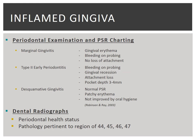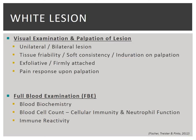In considering the differential diagnosis relating to the inflamed gingiva, a full periodontal examination is required to assess pocket depth and periodontal status. Findings will help discern between the list of differential diagnoses for the inflamed gingiva. Radiographs such as bite-wings, periapicals, and OPG are required to assess periodontal health status and to identify any pathology pertinent to the region of concern. With respect to the white lesion, one must check that the lesion is presenting unilaterally.